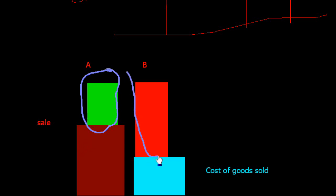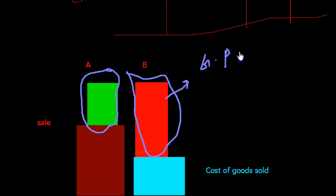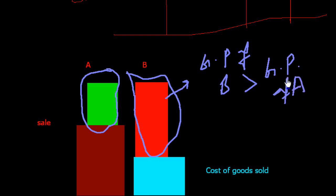Company B has more gross profit. So this is the main point — the gross profit of Company B is more than the gross profit of Company A. First of all we check gross profit by comparing it with cost of goods sold.